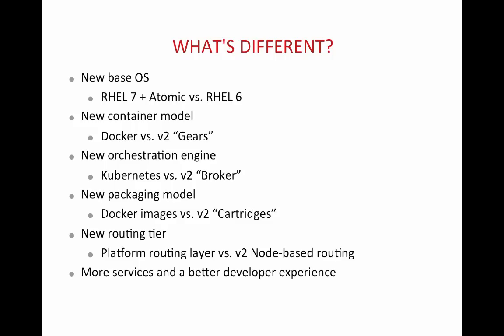Let's look at what's different between OpenShift version 3 and the earlier versions of OpenShift, specifically OpenShift version 2. The new base OS is going to be RHEL 7 instead of RHEL 6.x — for example, the OpenShift version we are using right now uses RHEL 6.6, which we will be moving to RHEL 7 in the case of v3. The containers are going to be Docker containers instead of Gears.